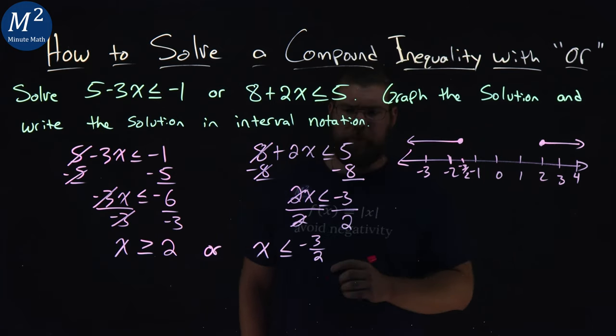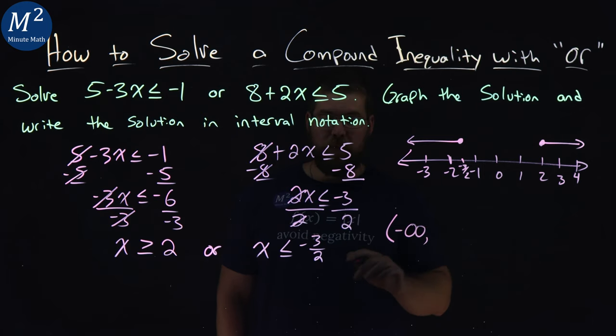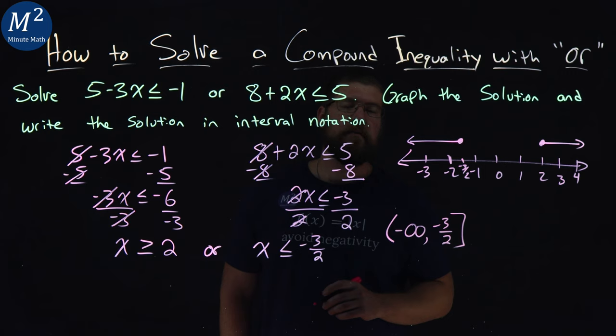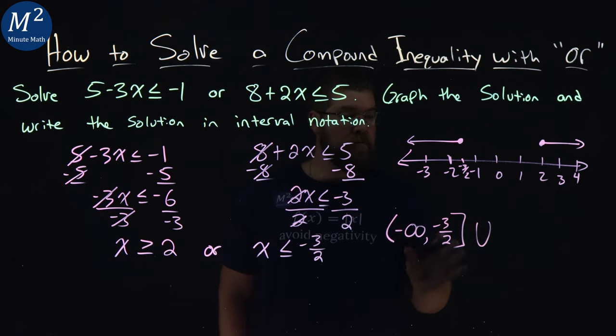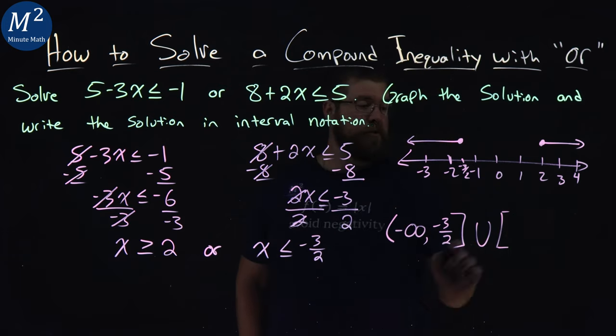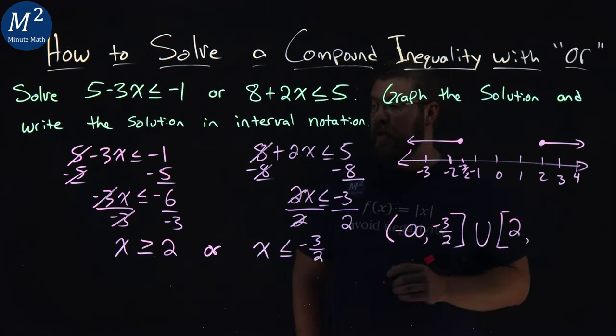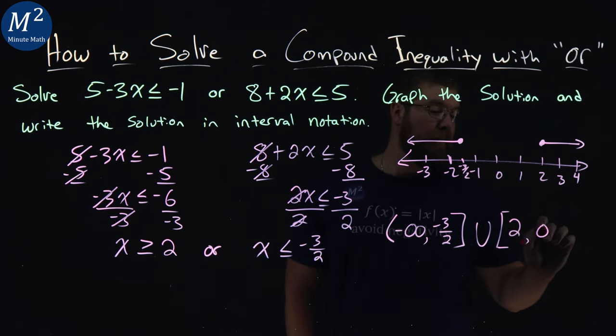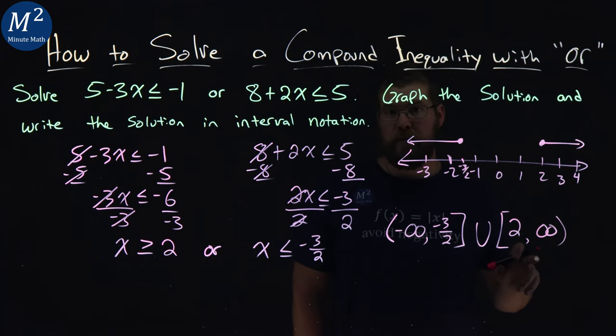Now interval notation here gets a little tricky. x can be negative infinity, so we have a parenthesis negative infinity here, all the way up to negative 3 halves. It can equal 3 halves, so we put a bracket. This union shows us that it has an option, OR. We have x can equal, right, equal to 2, so a bracket there, and it goes all the way up to, well, positive infinity, in parenthesis. That union there tells us it can be this one or this one.